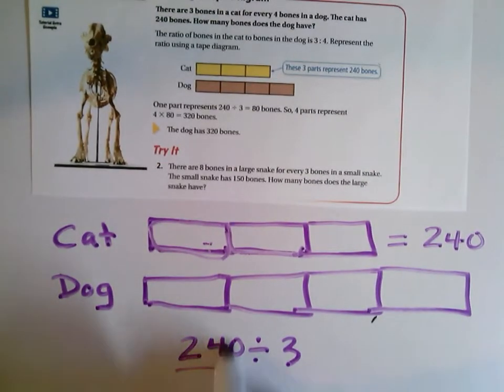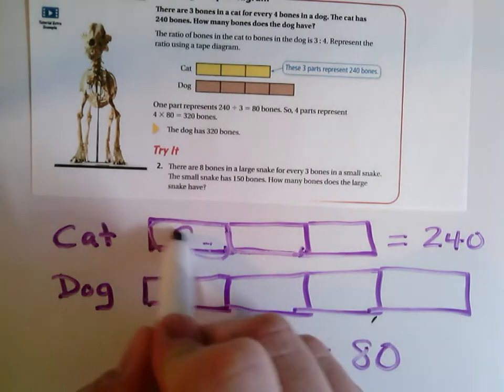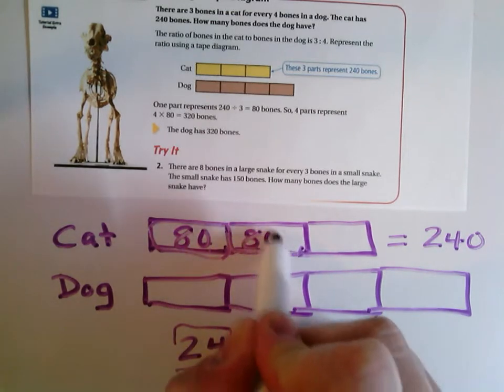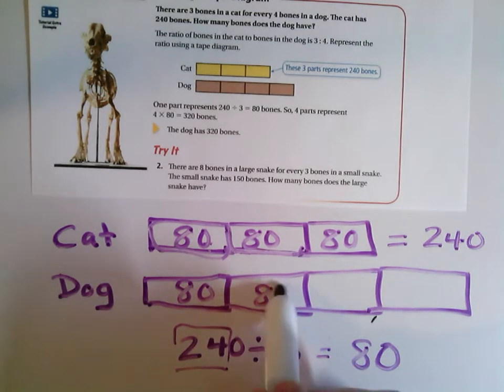So kind of use those basic facts. Here, 24 divided by three is eight. So 240 divided by three is 80, which means each of these sections, each of these pieces is going to be 80. They're 80 for the cat, and we have equal pieces for the dog. These are 80 as well.